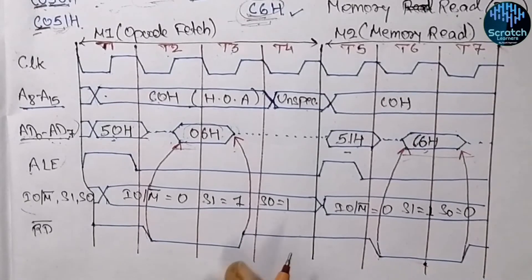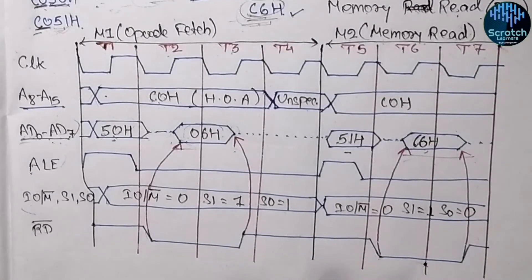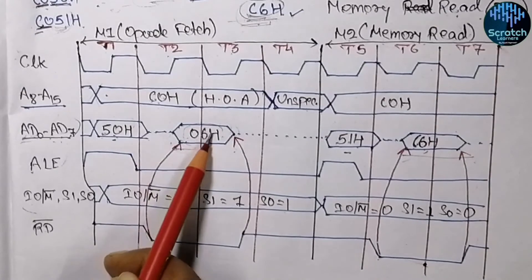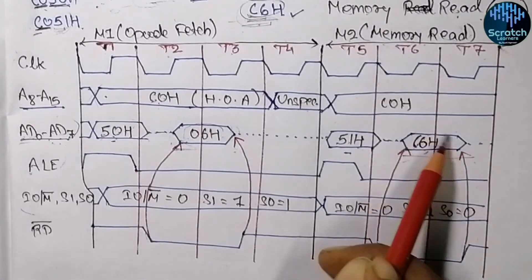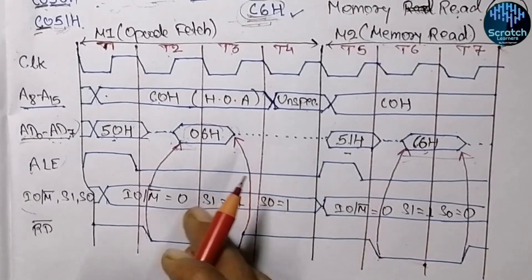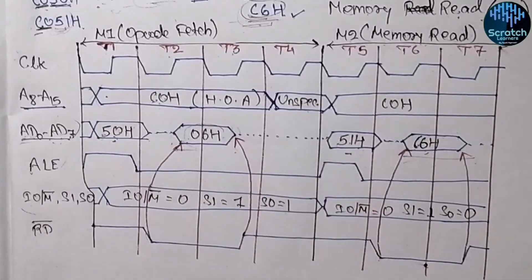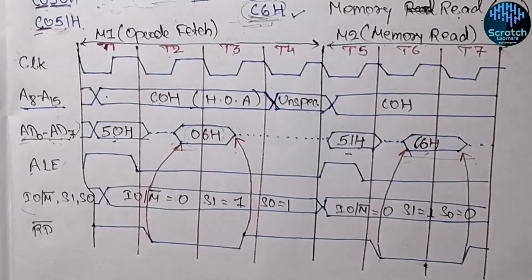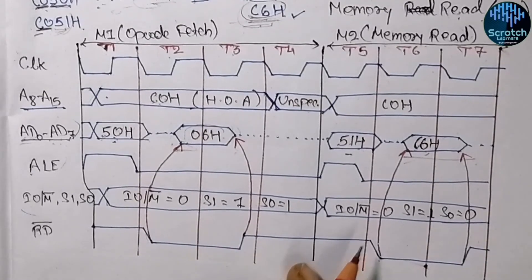This is how the timing diagram of the MVI B instruction looks. If you want to modify it — for example, using MVI C with some data — you just write the opcode of the MVI C instruction and whatever data you need to fetch in the corresponding place; the whole process remains the same. To change the memory address, write the higher-order address and lower-order address accordingly. I hope you understood this timing diagram. If you have any doubt, ask in the comments. Please subscribe to our channel, and in the next videos we will discuss more timing diagrams on MOV, STA, and more. Thank you.